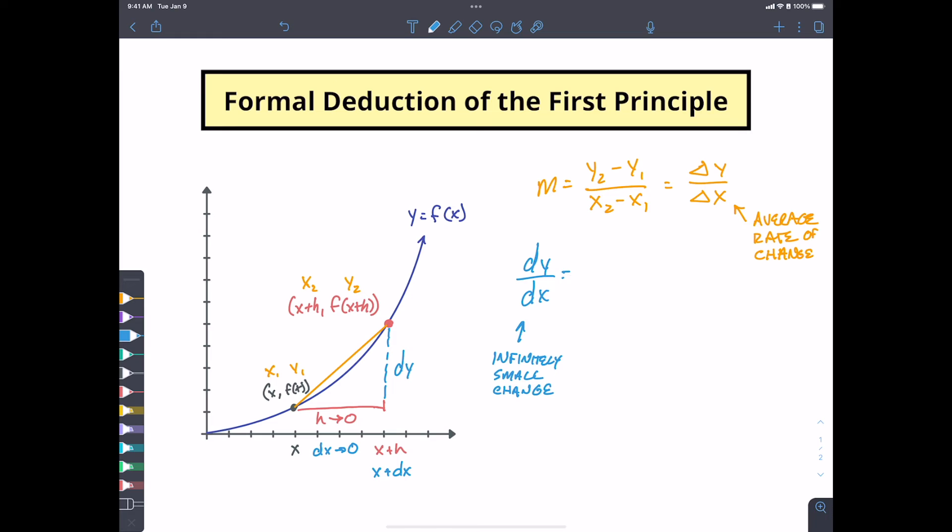So this infinitely small change, so these two things are kind of linked, right? These two things are kind of linked, but this one is infinitely small. This one is your average. This is going to be getting,